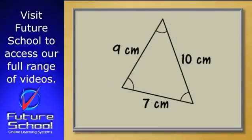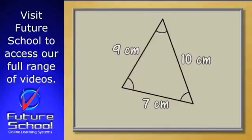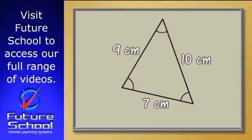The cosine rule can also help us find the sizes of the angles of a triangle if we're given the lengths of all three sides. For example, if we're told the lengths of the three sides of a triangle are 7 centimeters, 9 centimeters and 10 centimeters, we can find the size of any of the angles we choose by using the cosine rule.